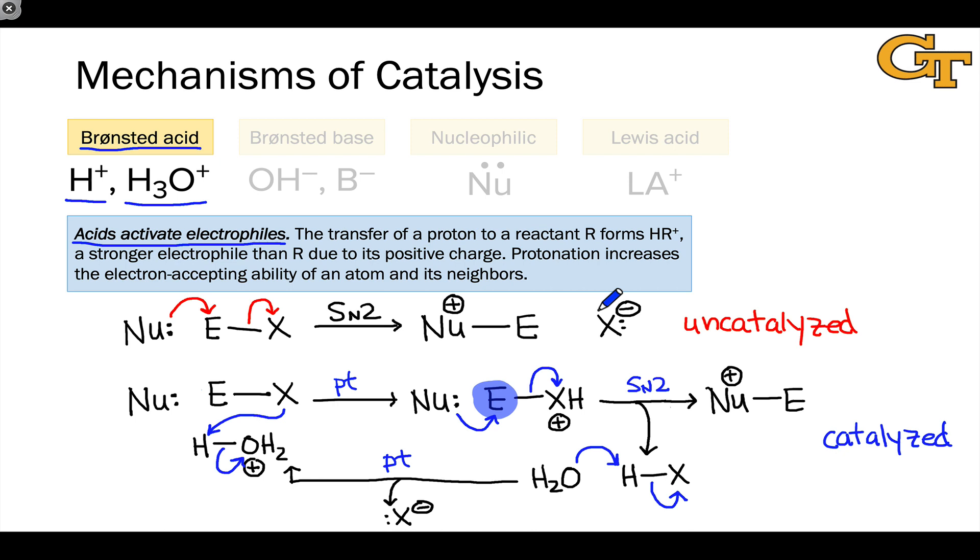The other thing to notice is that in the first step, we put a proton on the electrophile, and this increased the electrophilicity of the molecule that's going to accept electrons in the subsequent step by making it positively charged. Protonation increases the electron accepting ability or electrophilicity of an atom and its neighbors. So the electrophilicity of X is increased through protonation at E.